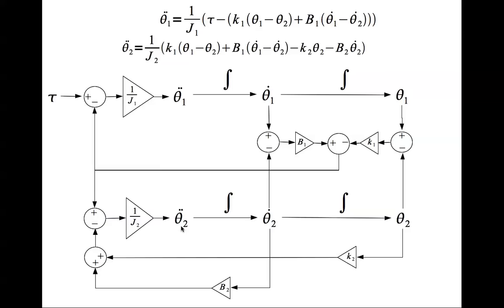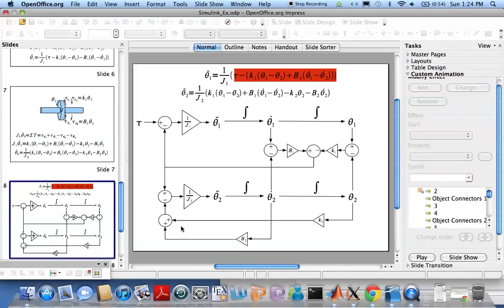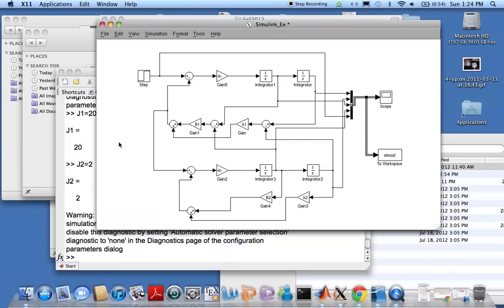Now it so happens that I have already prepared the simulation in MATLAB. Let's go have a look at it. There you have it, so that is your 1 by J1, this is theta 1 double dot, theta 1 dot, and theta 1. And right here we have theta 2 double dot, theta 2 dot, and theta 2.